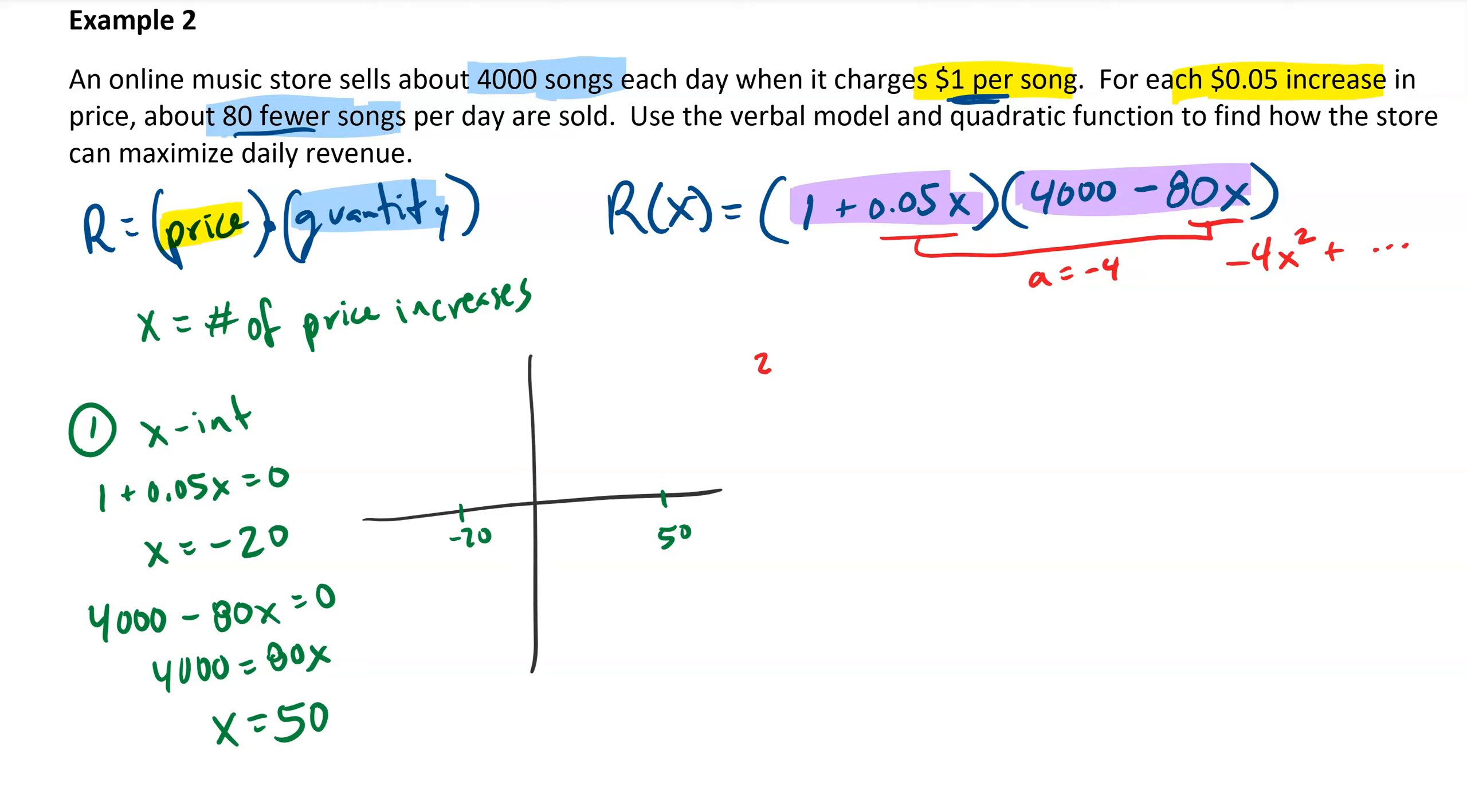My second step is to find the line of symmetry, and that's going to be the point exactly halfway in between. So we can average those two numbers together: 50 plus negative 20 over 2. 30 divided by 2 is 15. So my line of symmetry is x equals 15, and that's where the vertex lives.